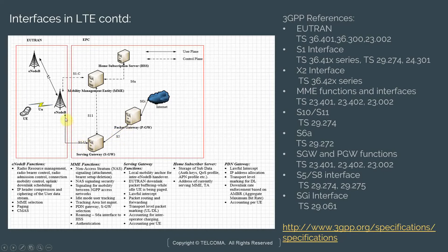An interface that serves user plane traffic is denoted by a solid arrow, whereas an interface that serves control plane information is represented by a dashed or broken arrow. 3GPP does a wonderful job at defining each of these interfaces.